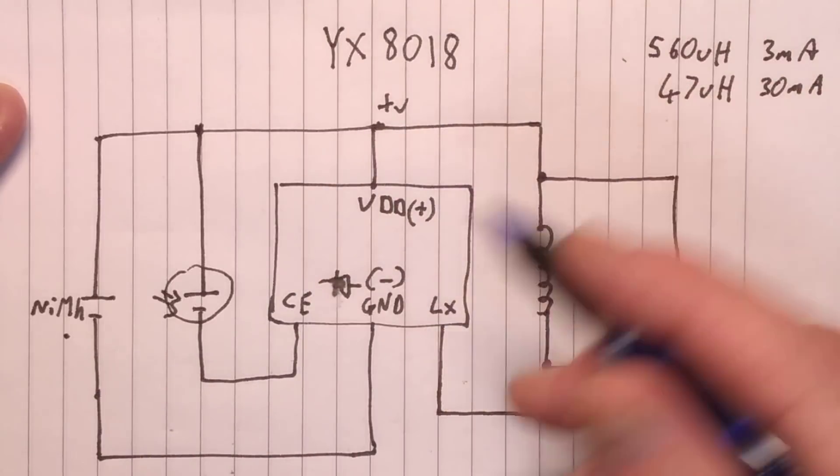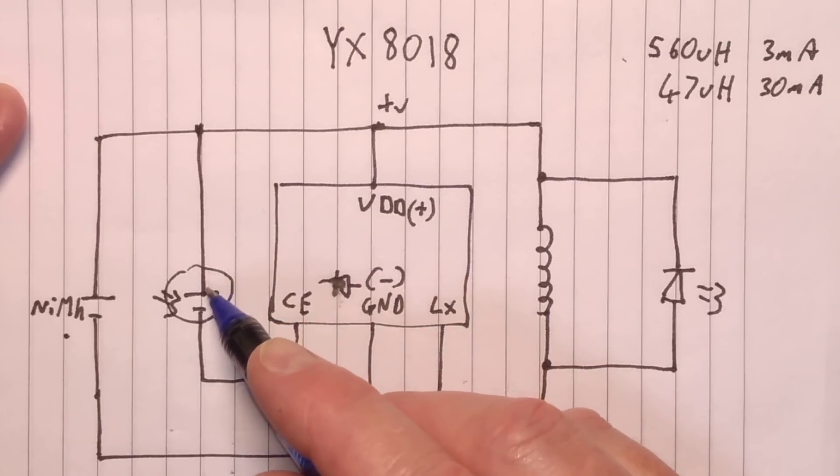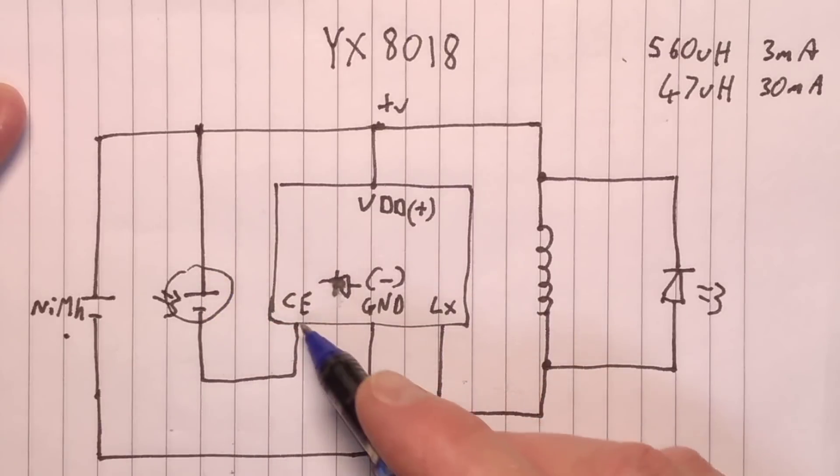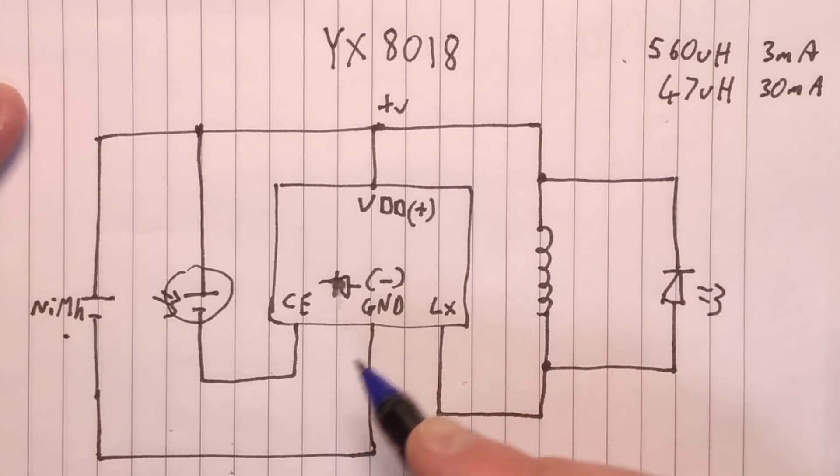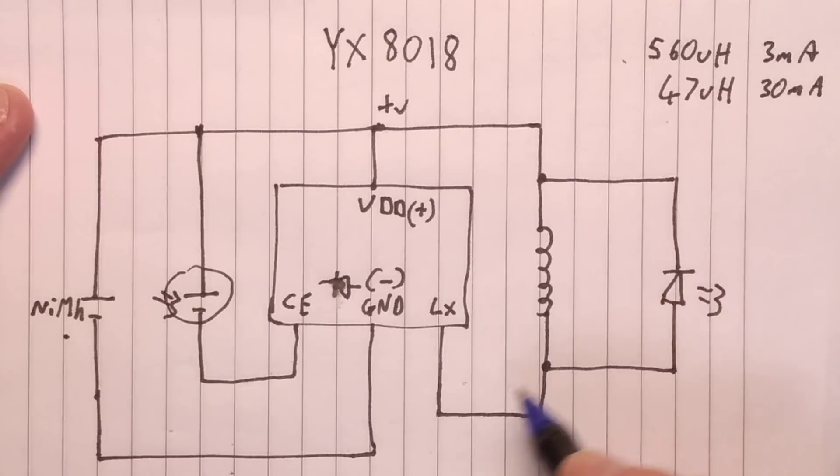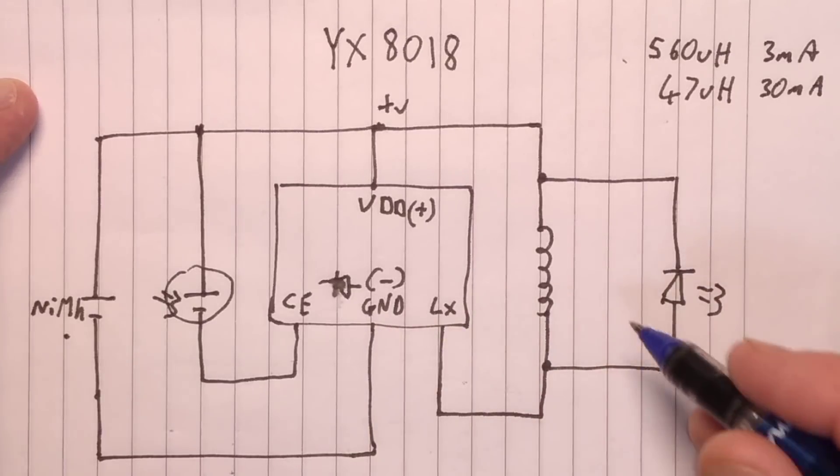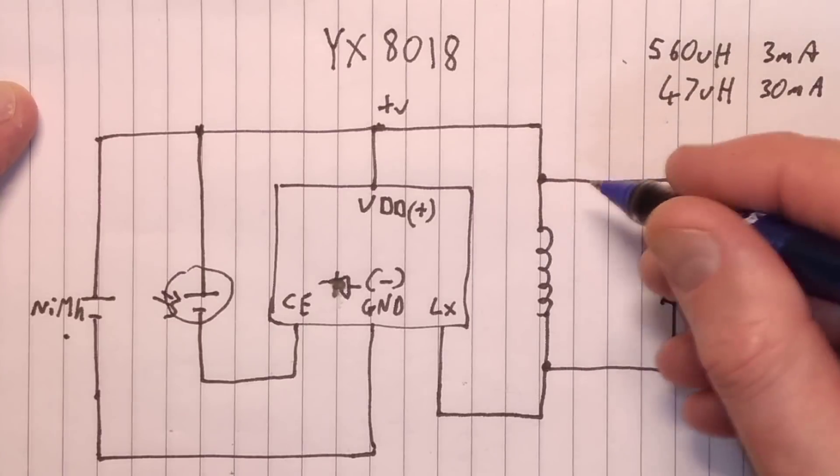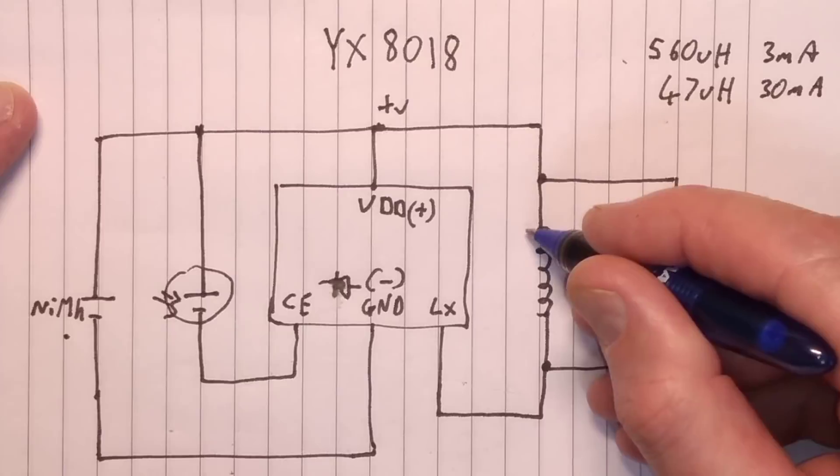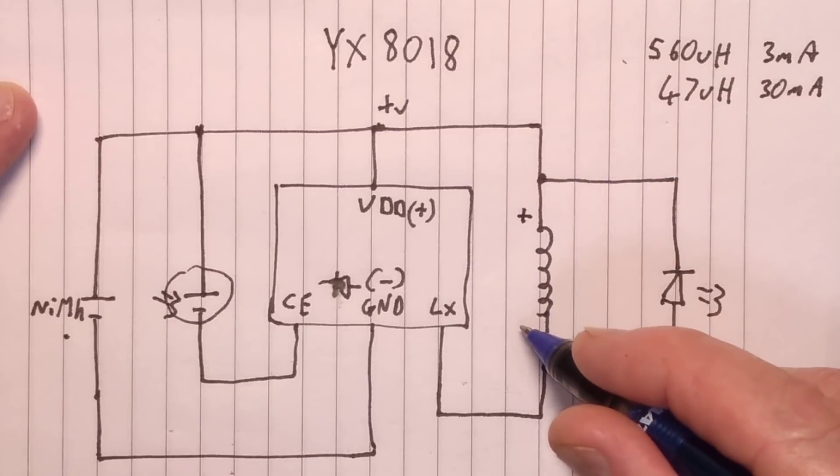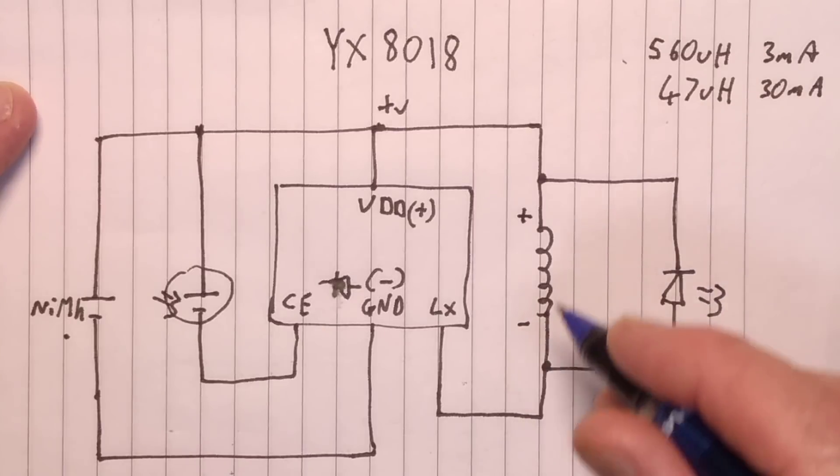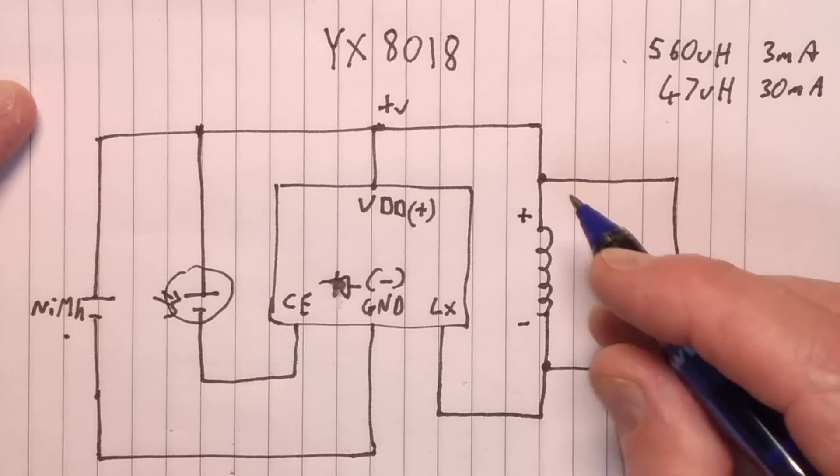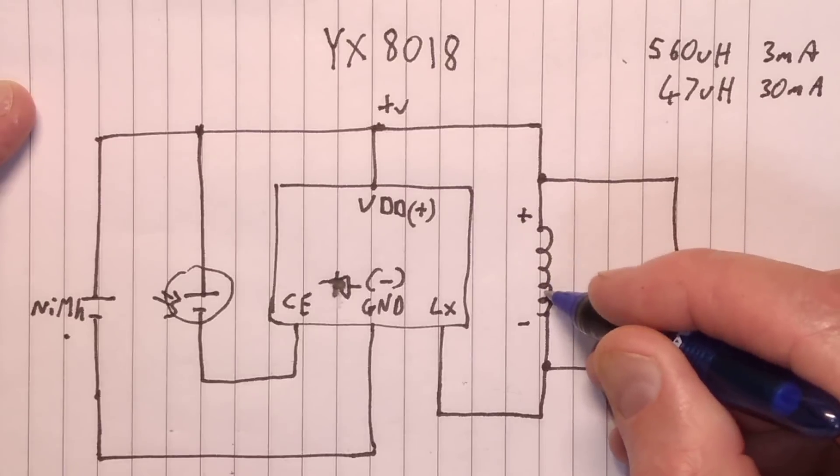But when it gets dark and the amount of current that the solar panel puts out is somewhere in the region of less than a hundred microamps or so, this chip then turns on. And when it turns on, the LX is repeatedly pulsed to the ground. What happens there is that when it's turned on, this inductor has this end connected to positive and this end is taken down to negative. The LED won't light at that point because it's reverse biased.